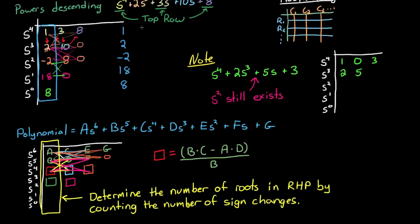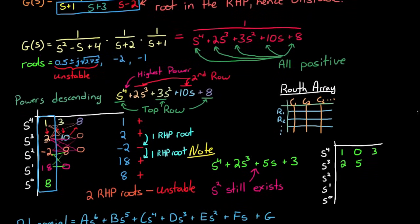We can determine the number of roots in the right half plane by looking at this first column. I'll rewrite it here to make it a little clearer. You can see that the first two are positive, then negative, followed by two positive values. It changes sign between 2 and negative 2, which means that there's a root in the right half plane, but then changes sign again between negative 2 and 18. So what we can deduce from this is that there are two roots in the right half plane out of the four roots in this system. Since there's at least one root in the right half plane, we know that this system is unstable. This is exactly what we would have expected since we built this transfer function with two roots in the right half plane and two roots in the left half plane. So the Routh array worked for us and we never had to solve for the roots directly.